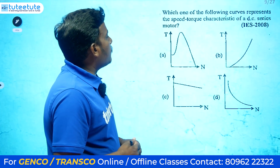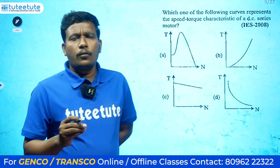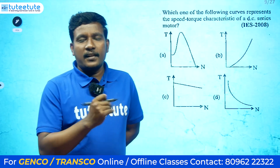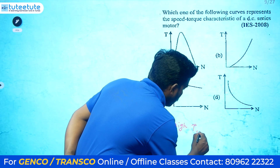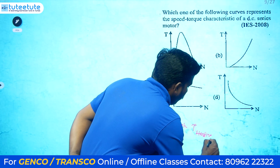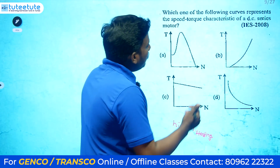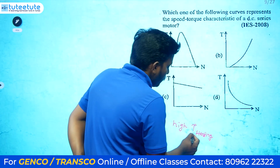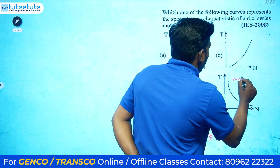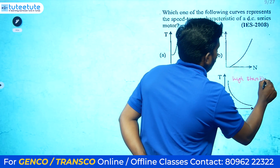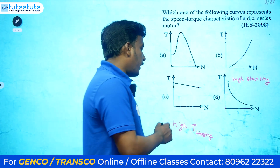Next: which curve represents the speed-torque characteristic of a DC series motor? One key thing to remember is that a DC series motor provides high starting torque. Looking at the given characteristics, we identify the curve showing high starting torque at the time of starting. The other characteristics do not show this feature. The answer is option D.